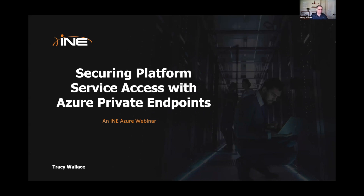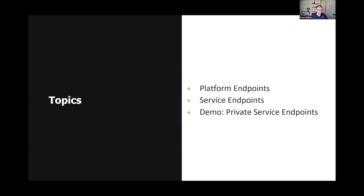And that's what we're going to talk about today. So we have three topics that we're going to cover. I'm going to talk about platform endpoints, which I kind of already talked about. And then I'm going to talk about service endpoints. And then I'm going to go into a demonstration. I've got an architecture built where I've got a web app that uses the combination of storage, SQL Server database, and also Cosmos DB, all of which is going to get through private links through private service endpoints.